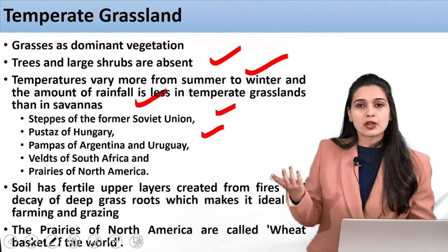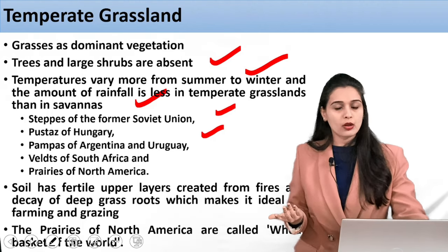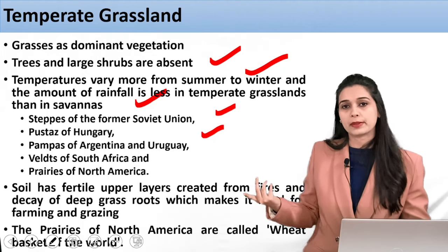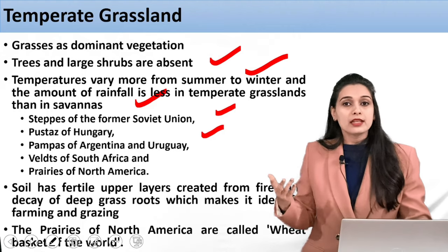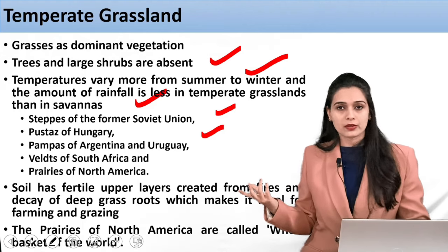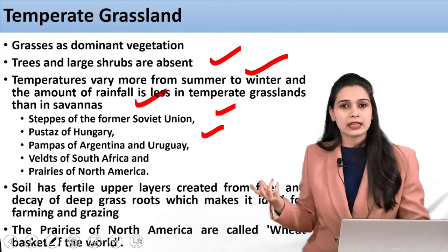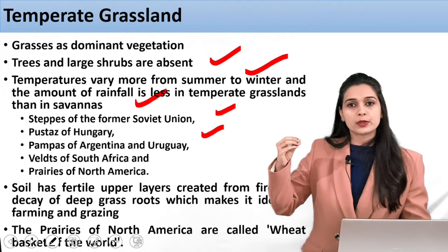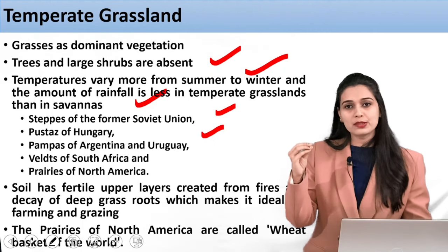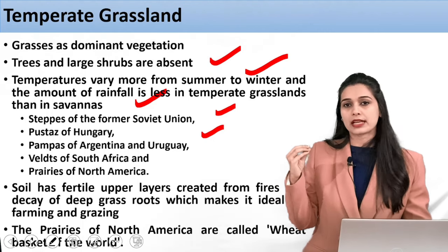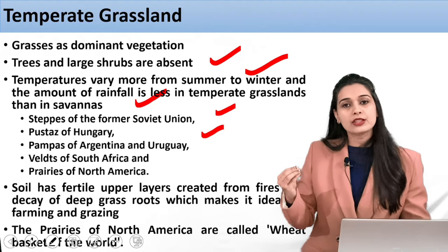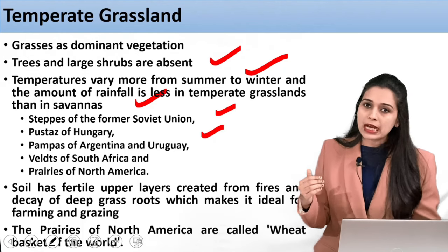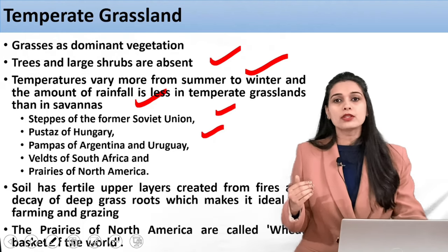You must know these names. For example, if you are writing an answer about the grasslands of North America, instead of saying 'grasslands of North America' you should write 'prairies of North America' — that is more refined and will fetch you more marks. So knowing specific keywords refines your answer writing.